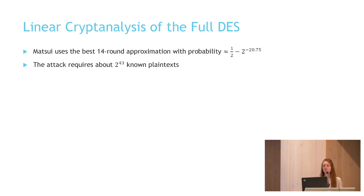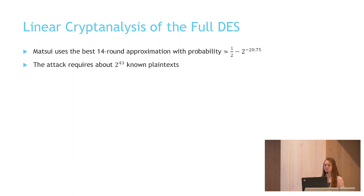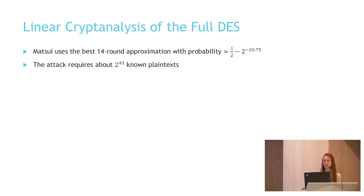In order to attack the full 16-round DES, Matsui uses the best 14-round approximation. Matsui uses Algorithm two to find the parity bits of the key involving the approximation, as well as bits of the first and last subkeys. The attack requires about 2 to the 43 known plaintexts and comparable time of analysis.